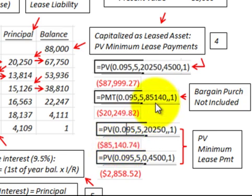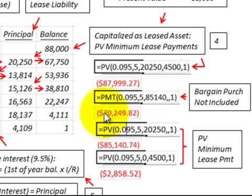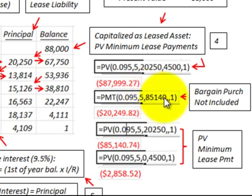You can also put these values into a calculator. Using 9.5% over five years with the $85,140 present value for the minimum lease payments gives a payment amount of $20,249. You either know the payment amount or the minimum lease payment present value — they must relate to each other to determine the minimum lease payment of $88,000.